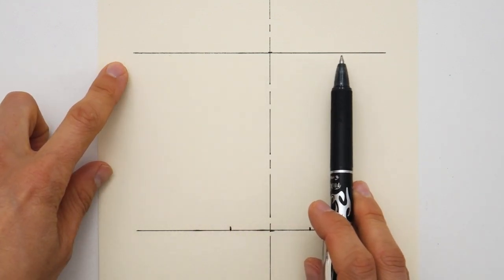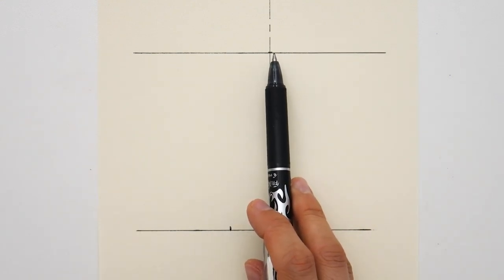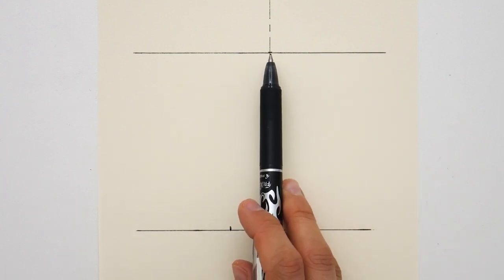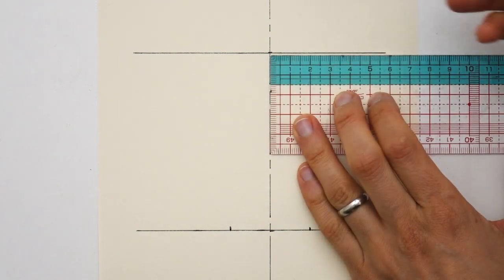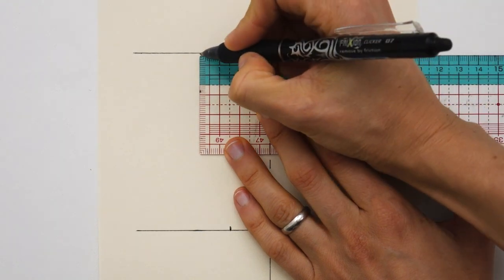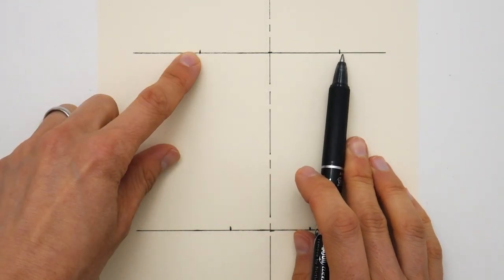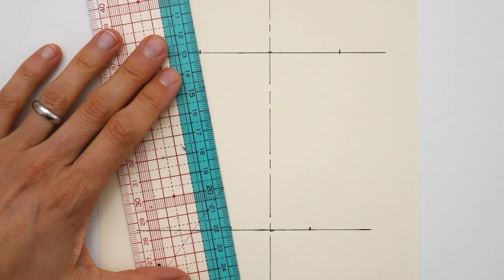The whole ankle circumference is equally distributed on both sides of the center straight line. We are now going to do exactly the same on the knee line. Starting from the center line towards the front side, I measure and mark half of the knee measurement and we mark the other half on the other side. So here we have the circumference of our knee divided by two and here as well. The full circumference of our knee is equally distributed on both sides of the center straight line.